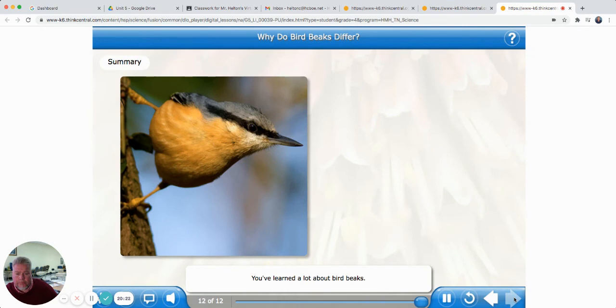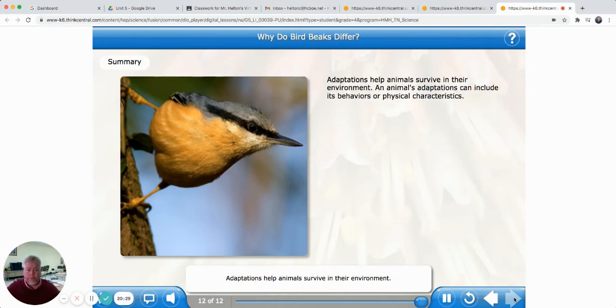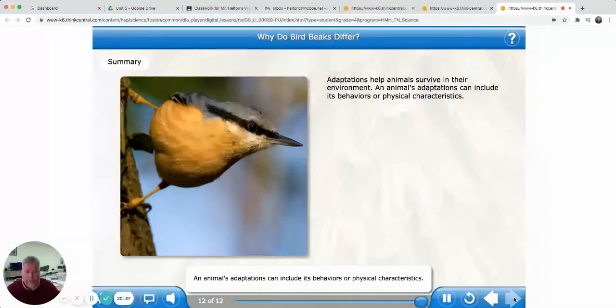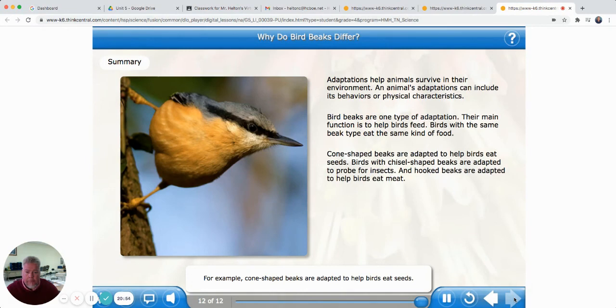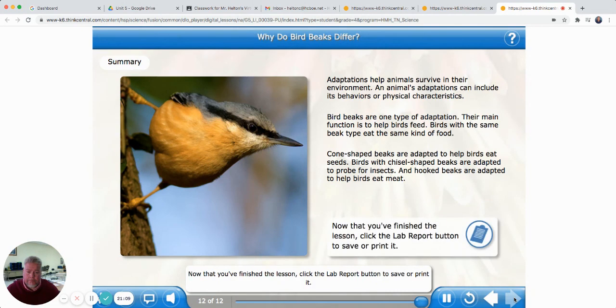The finches with the large, strong beaks could open the hard seeds, so they survived. The finches with the small beaks couldn't open the hard seeds, so they died. I think we were right. You've learned a lot about bird beaks. Before we finish, let's take a quick look at the main points you covered. Adaptations help animals survive in their environment. An animal's adaptations can include its behaviors or physical characteristics. Birds have adaptations to help them survive in their environment. Bird beaks are one type of adaptation. Their main function is to help birds feed. Birds with the same beak type eat the same kind of food. For example, cone-shaped beaks are adapted to help birds eat seeds. Birds with chisel-shaped beaks are adapted to probe for insects. Likewise, hooked beaks are adapted to help birds eat meat. Now that you've finished the lesson, click the lab report button to save or print it.